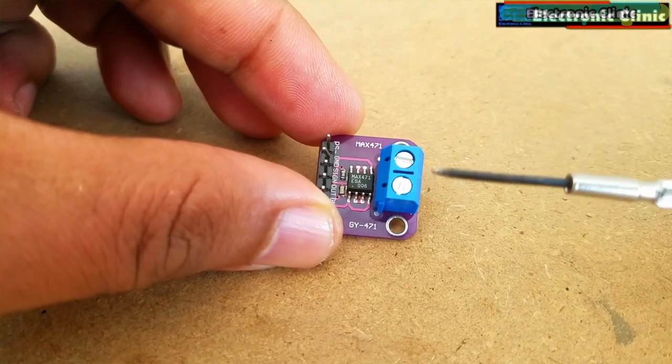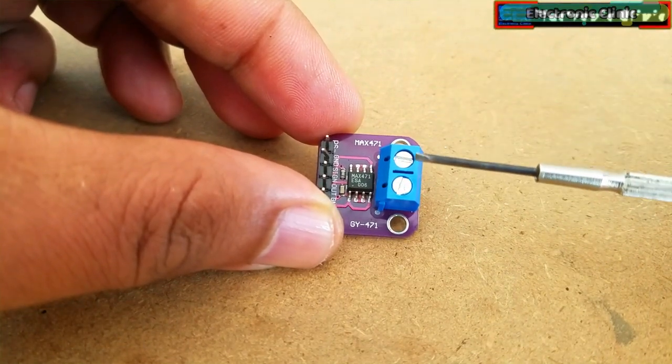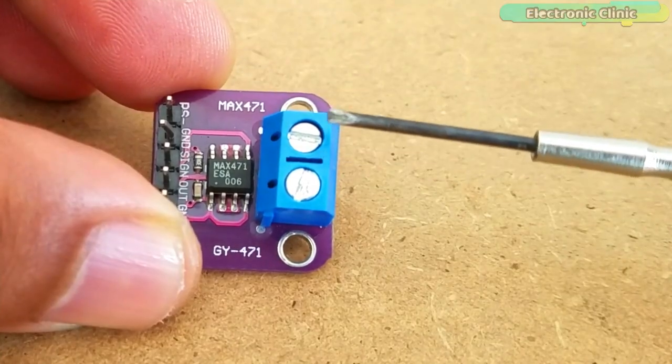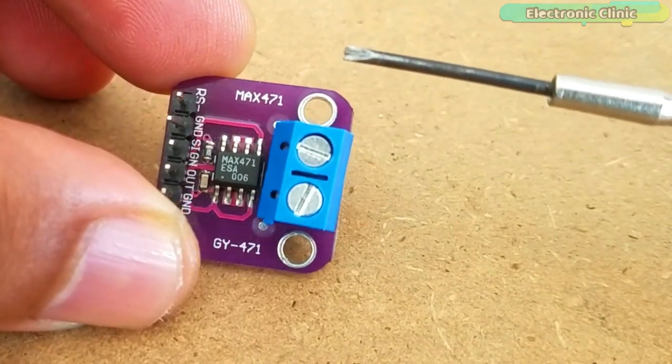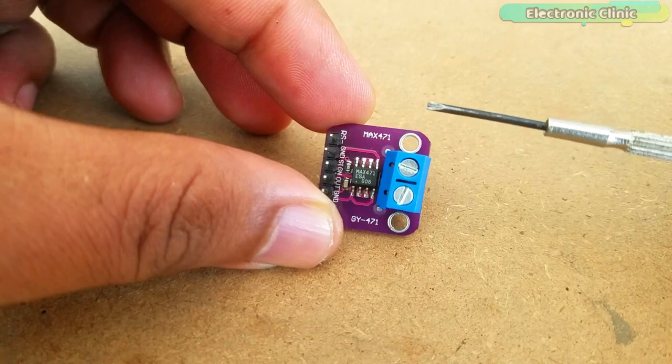Inside the IC there is a sensing resistor and it's across these two terminals. This resistor is a very low value, it's 35 milli ohms.